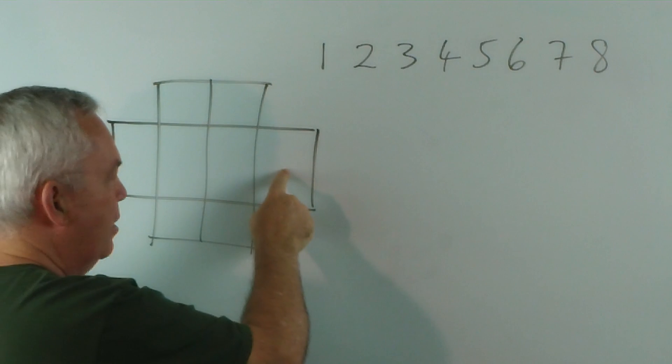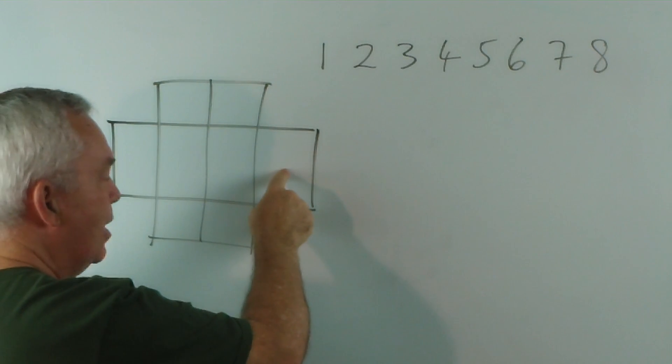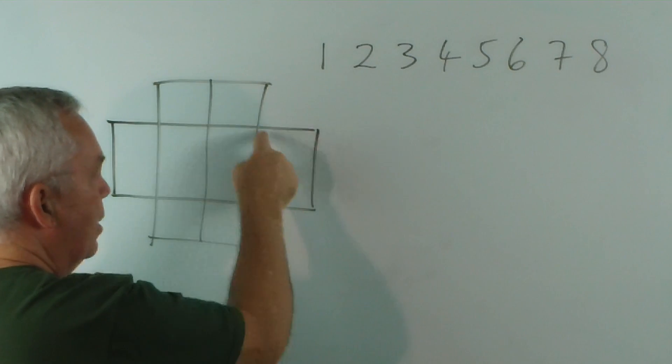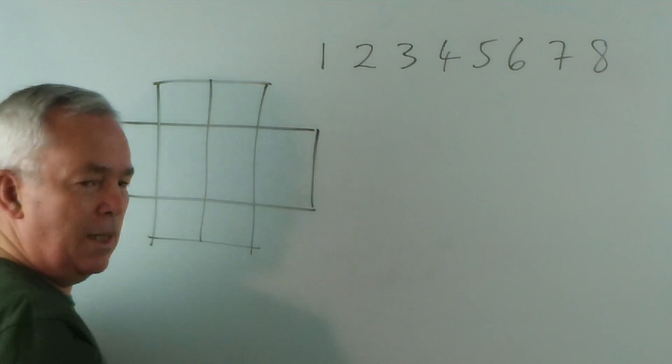then you are not permitted to put an adjacent number in one of these three squares that touches it. So it can touch on a boundary or it can even touch on a corner diagonally.